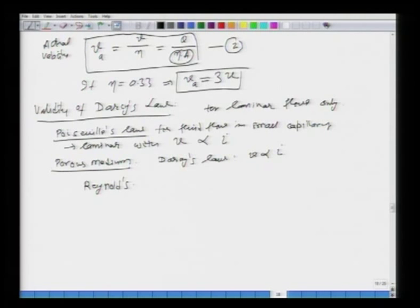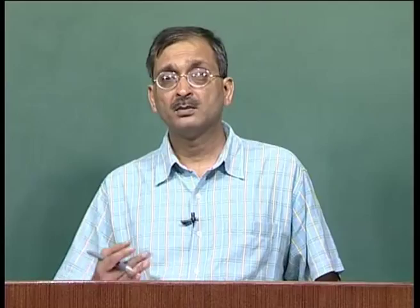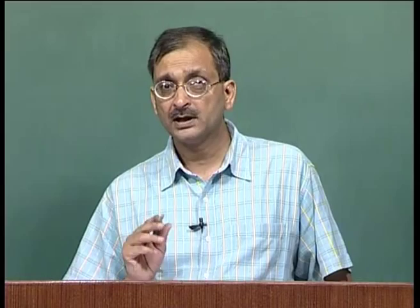Whenever we talk about laminar flow and turbulent flow, there is a limit defined by the Reynolds number. If the Reynolds number is less than a particular value, the flow is laminar. Once velocities exceed a certain amount such that the Reynolds number exceeds that limit, you have turbulent flow. For Darcy's law and movement of water in the saturated zone, the Reynolds number must be less than or equal to 1 — that is the established criteria.